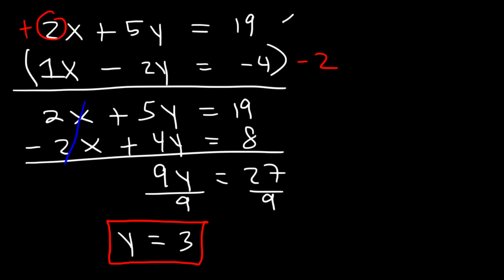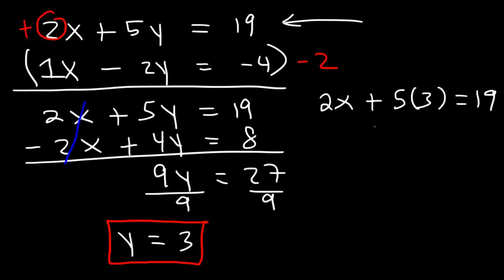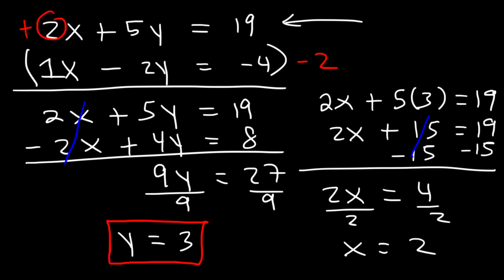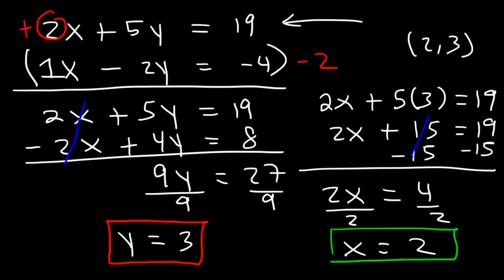Using the first equation, we replace y with 3. 5 times 3 is 15, so 2x plus 15 equals 19. Subtracting 15 from both sides: 19 minus 15 equals 4. Dividing both sides by 2: 4 divided by 2 is 2, so x equals 2. Therefore the solution is (2, 3).